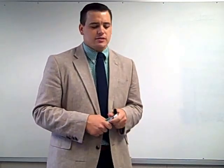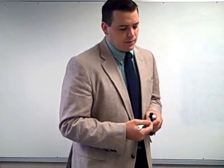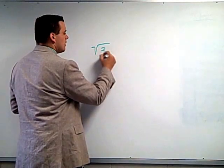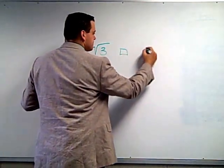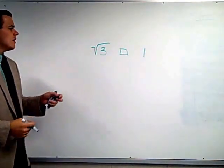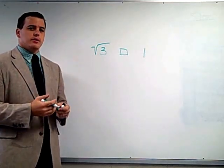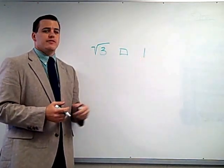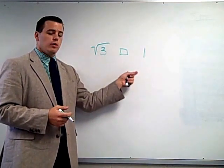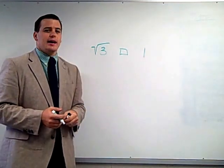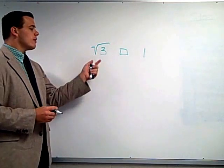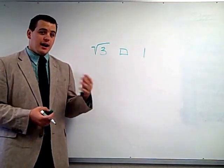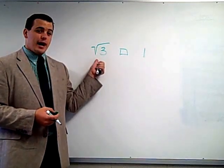Let's start with the first example: comparing the square root of 3 to 1. The rational number in this problem is 1 — we can write 1 as a fraction, 1 over 1, making it a rational number. The square root of 3 is not a rational number, so we say it is irrational.